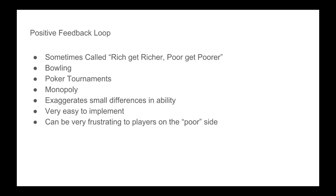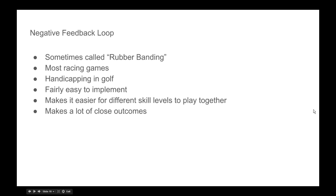A positive feedback loop is really easy to implement — all you have to do is give people rewards for winning and punishers for losing, and you have one. The greater the reward for winning, the bigger the loop. The bigger the punisher for losing, the bigger the loop. This is the way capitalist systems work — the richer you are, the more money you have, and the more ability you have to make money. If you're poor and borrow, you're losing money at an interest rate. If you're rich and loan, you're gaining money at an interest rate. It can be very frustrating when players are on the poor side.